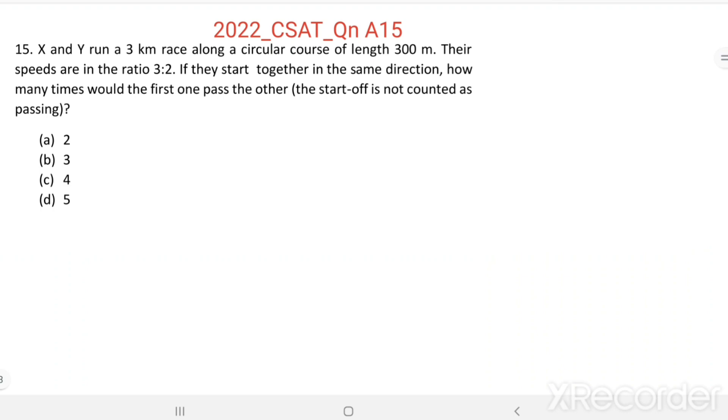X and Y run a 3 km race along a circular course of length 300 m. Their speeds are in the ratio 3 to 2. If they start together in the same direction, how many times would the first one pass the other? The start-off is not counted as passing.